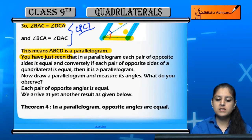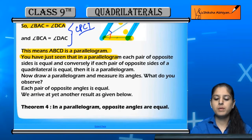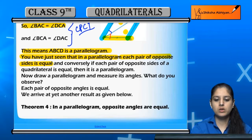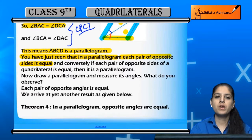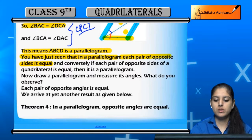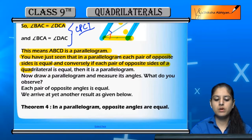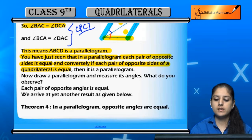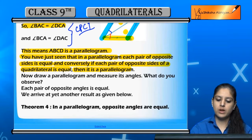We have just seen that in a parallelogram, each pair of opposite sides is equal. And conversely, if the two pairs of opposite sides are equal in any quadrilateral, then it is a parallelogram.